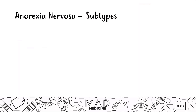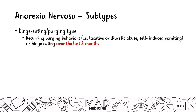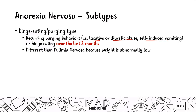There are two main subtypes of anorexia. The first is the binge eating and purging type. This is very similar to bulimia — the patient is going to recurrently binge eat and then purge through laxatives, diuretics, or self-induced vomiting for at least three months. The key difference from bulimia is that in this subtype the BMI is still less than 18.5, meaning their weight is abnormally low. So always: if it looks like bulimia but the BMI is less than 18.5, it is anorexia nervosa, binge eating and purging type.